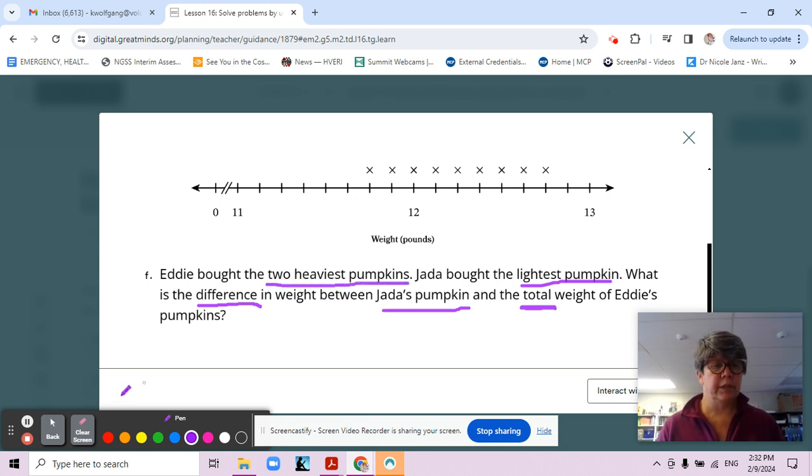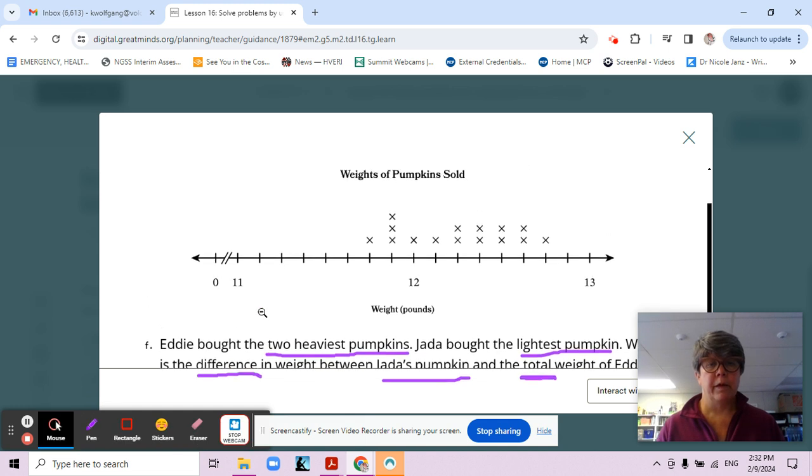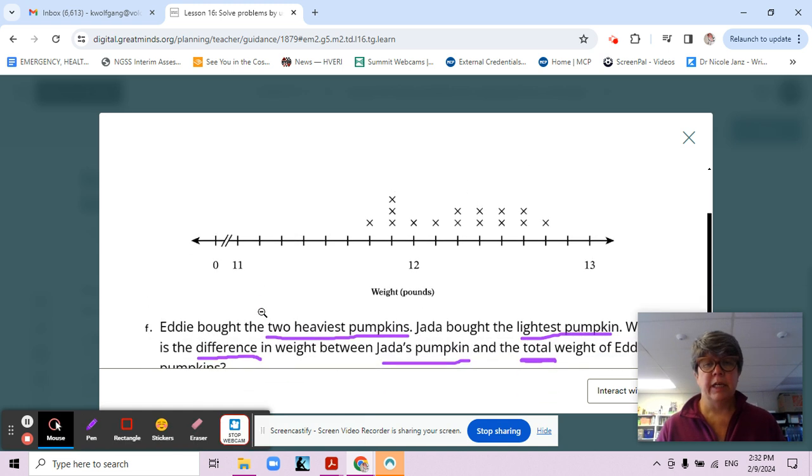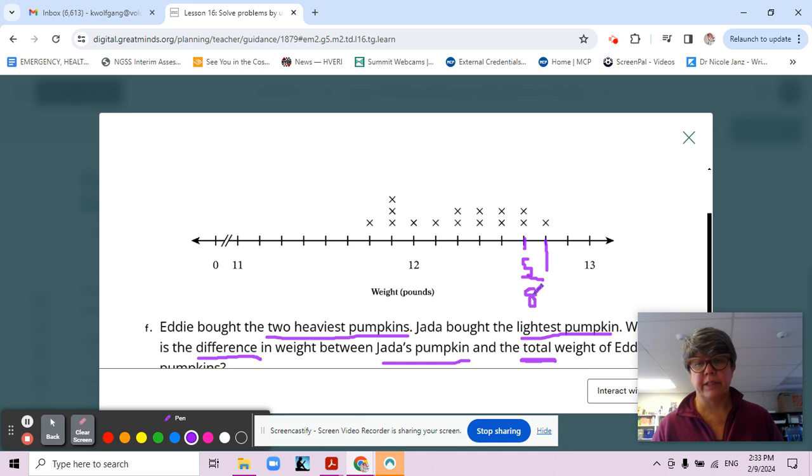Let's look at our chart here. The two heaviest pumpkins, we've got one here and one here. This is broken into eighths: one, two, three, four, five. This is going to be five eighths, so 12 and five eighths, and this one is going to be 12 and six eighths.